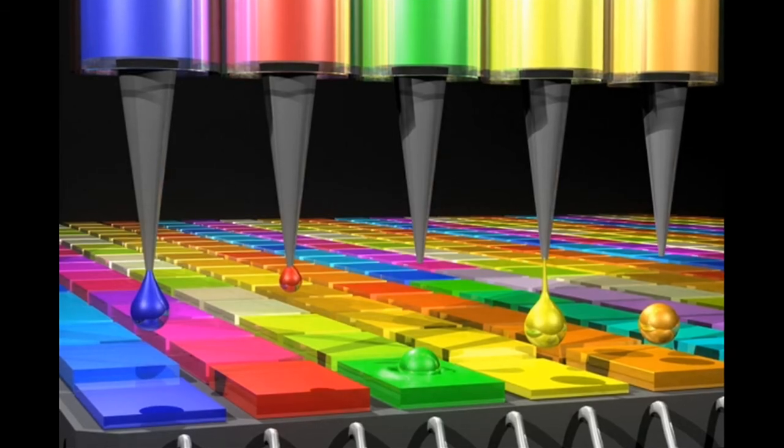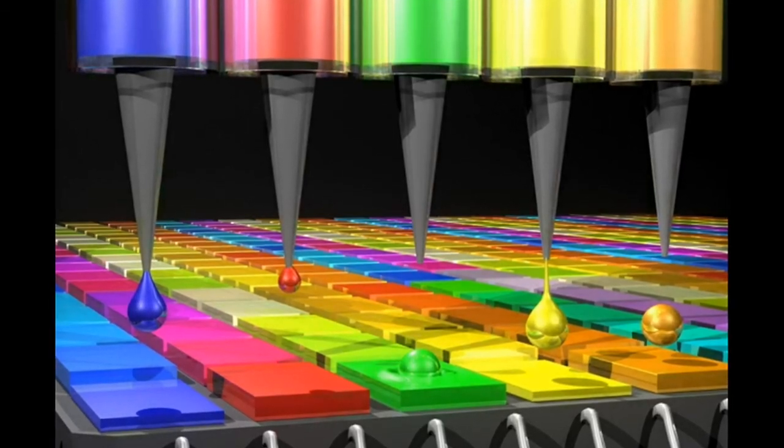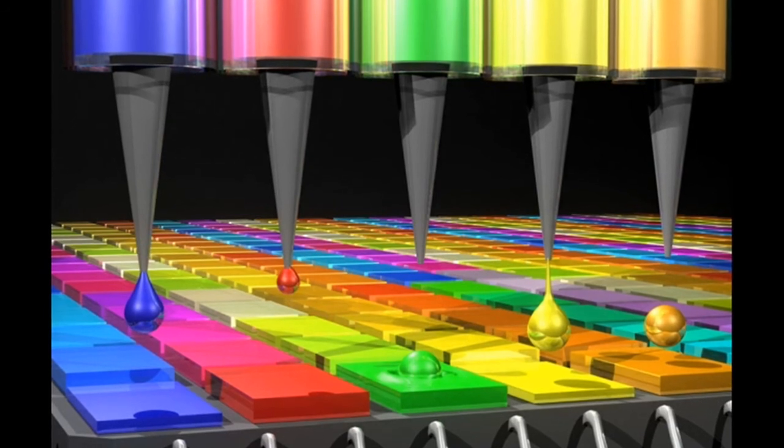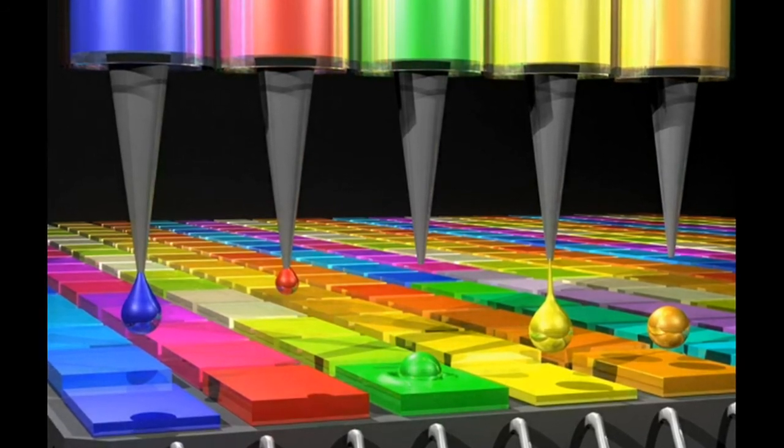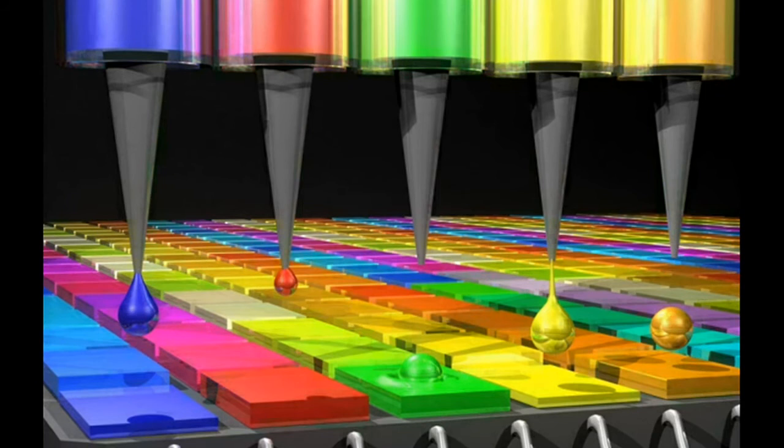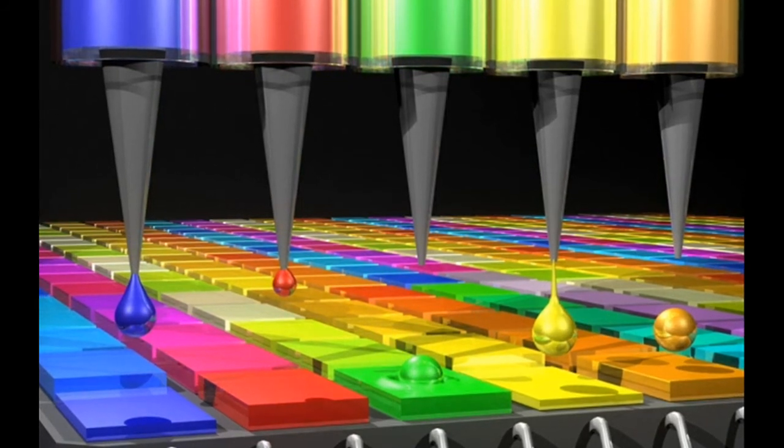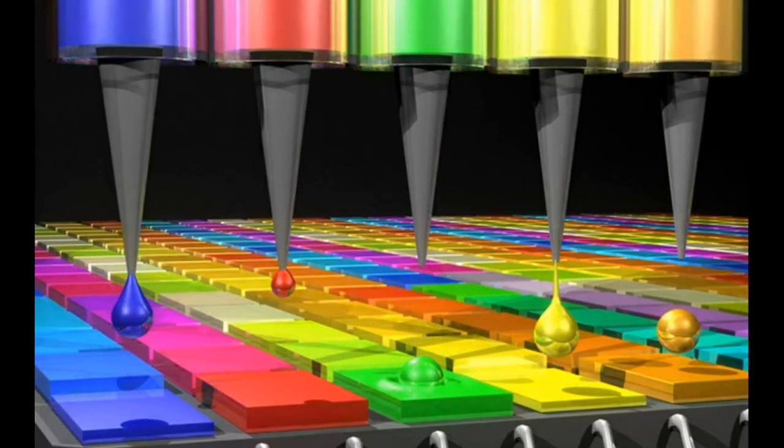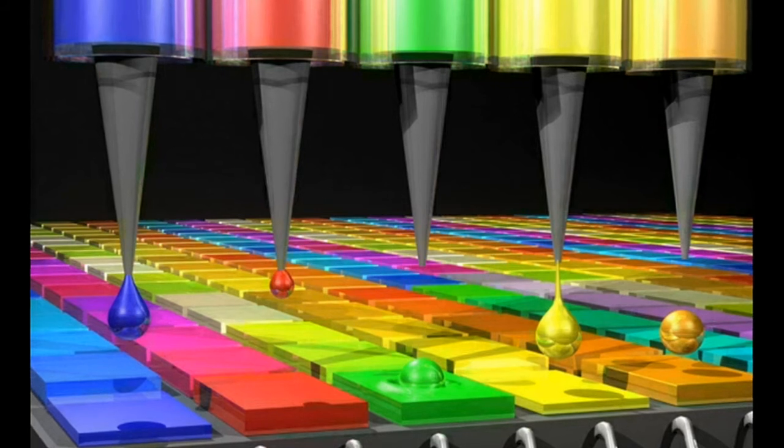By controlling the ratio of these starting materials, the temperature and the reaction time, scientists can generate a nearly unlimited number of dots with differences in an electronic property known as band gap, which determines the wavelengths of light that each dot will absorb.